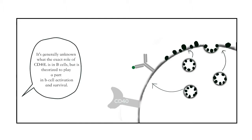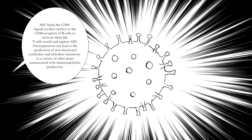It is generally unknown what the exact role of CD40 ligand is in B-cells, but is theorized to play a part in B-cell activation and survival. HIV binds the CD40 ligand on the surface to the CD40 receptors of B-cells to activate them like T-cells would and express AID.